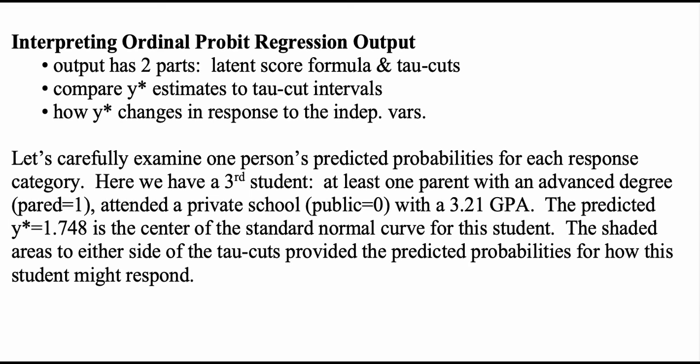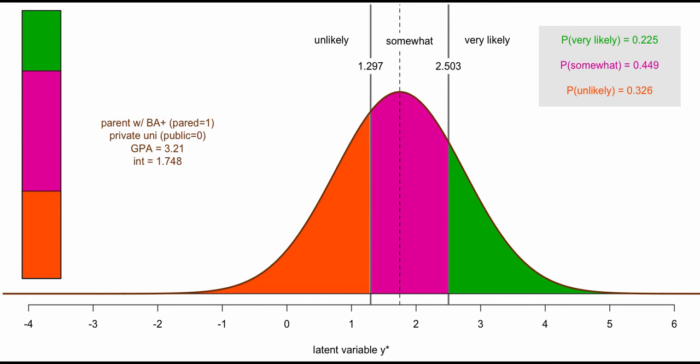Now let's examine the predicted probabilities for a specific third student: at least one parent with an advanced degree, attended a private school, and a GPA of 3.21. Using the formula, their predicted y* is 1.748, which becomes the center of the standard normal curve. The tau cuts remain at 1.297 and 2.503, and this person's predicted y* falls in the somewhat likely region.